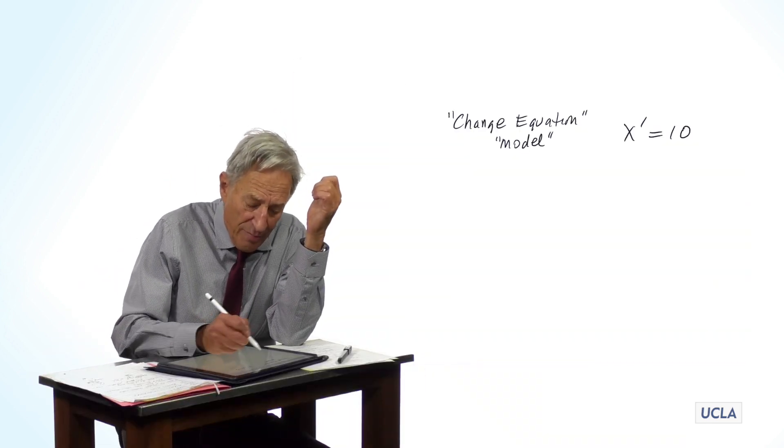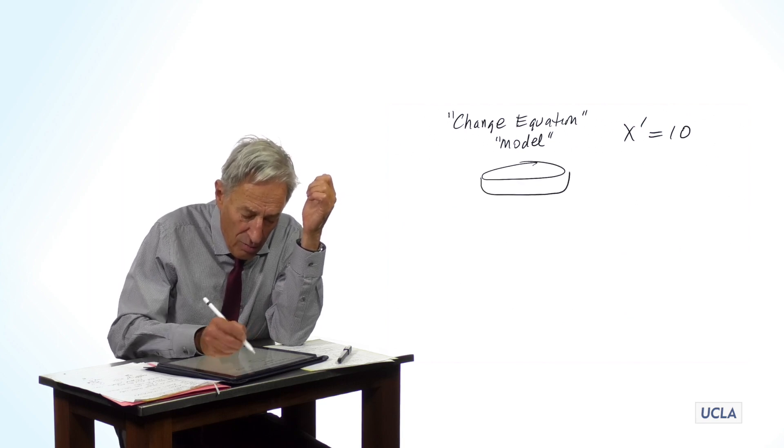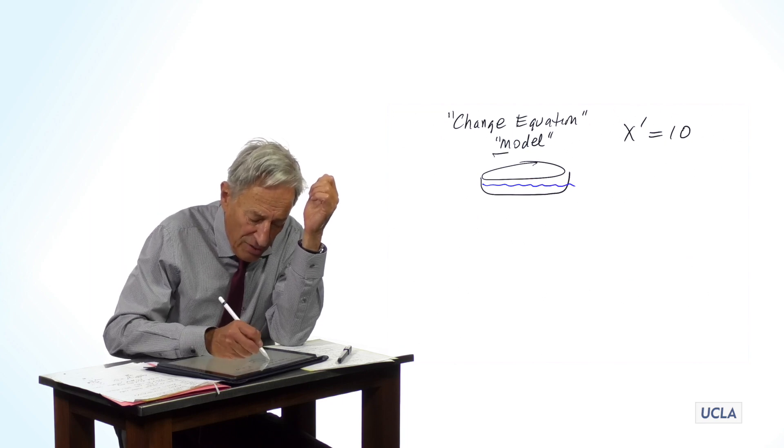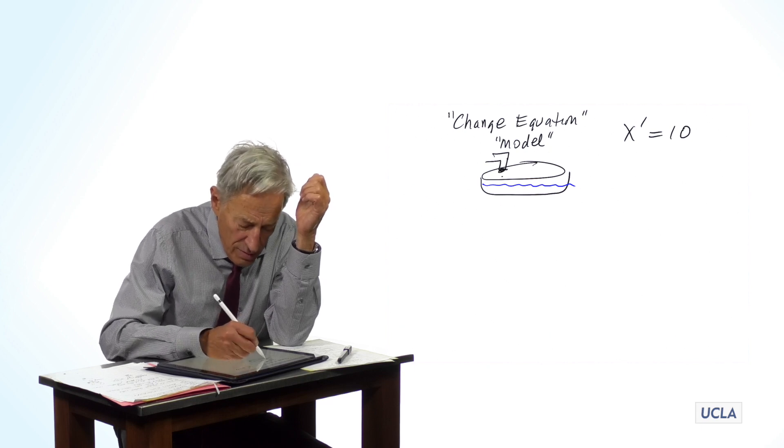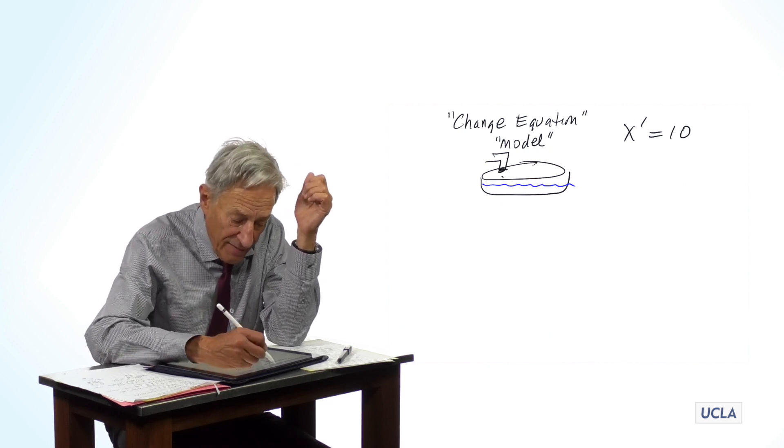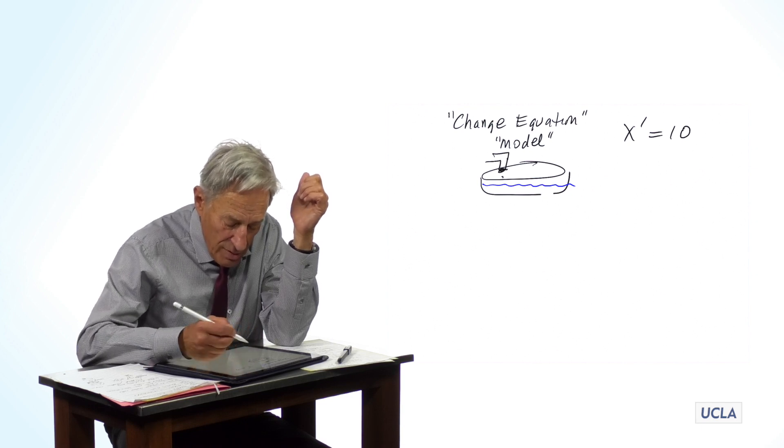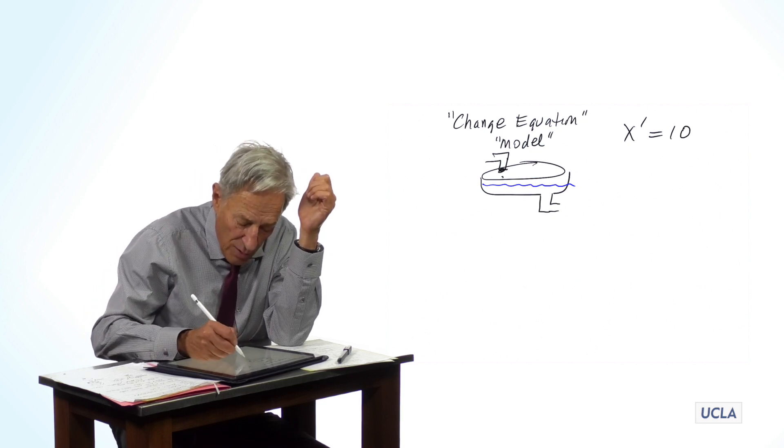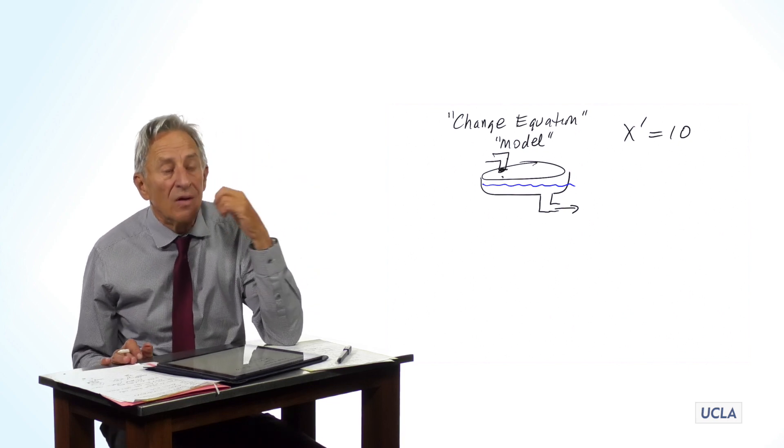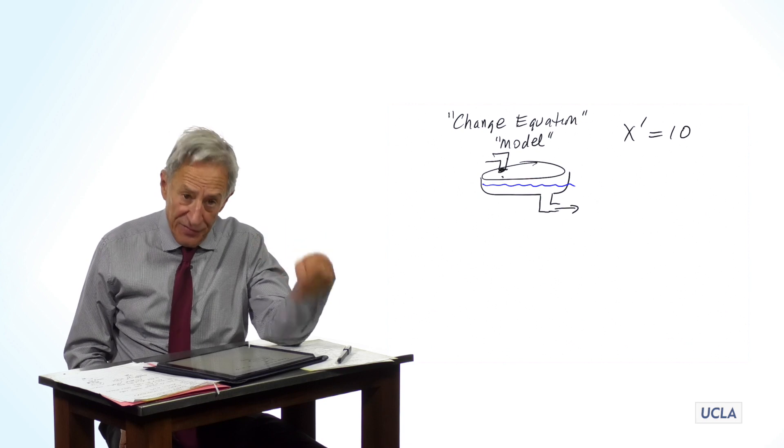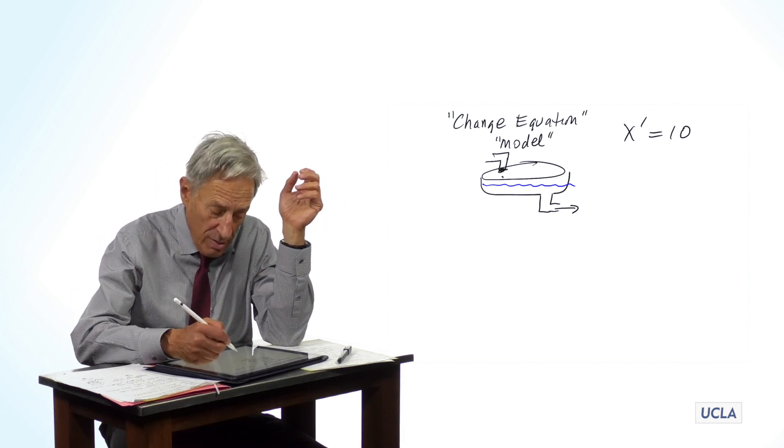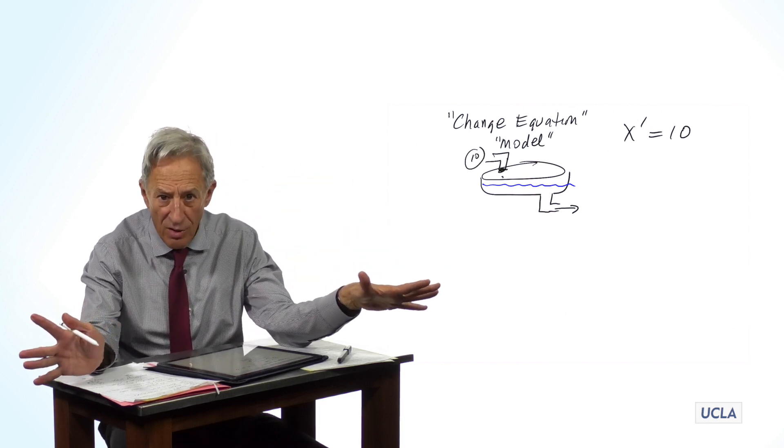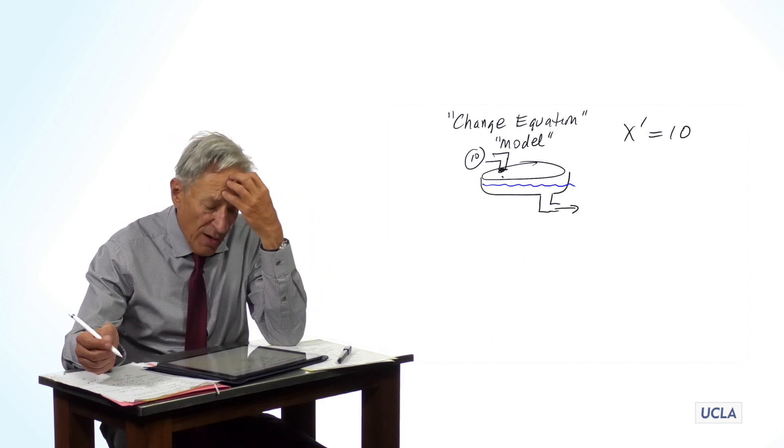So let's have a better bathtub model. And now, the bathtub model is going to have an inflow, which is the faucet. And it's also going to have a little outflow, and the outflow is going to be the drain, and the drain is going to put out water like that. So now we ask, what is the change equation for this set up, and we agreed that the inflow was just going to be a constant inflow of 10 gallons an hour. But now, what is the outflow?